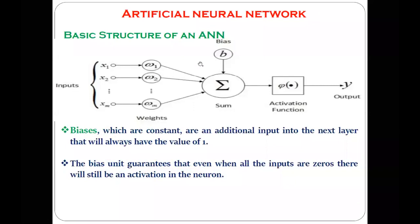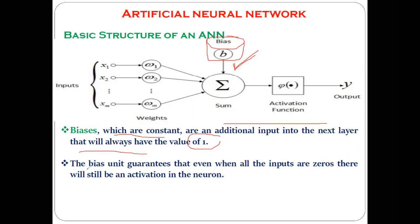One more important component you can see here is the bias. Bias is considered as a constant and is always considered as one. Bias is a constant additional input to the next layer that will always have the value one. The bias guarantees that even when all the inputs are zero, there will still be an activation in the neuron.